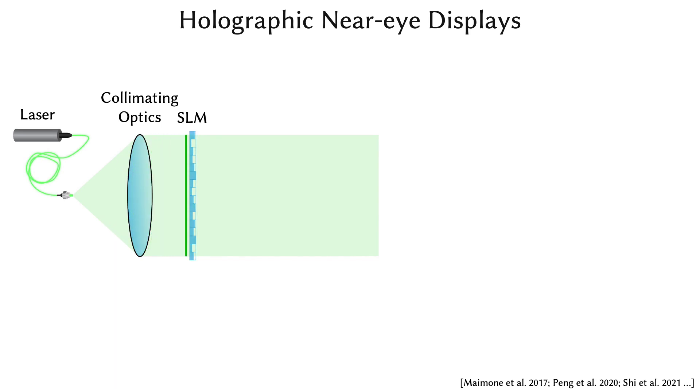Here, the phase of the field is delayed by the SLM, and interference creates the image that is seen by the user through the eyepiece.